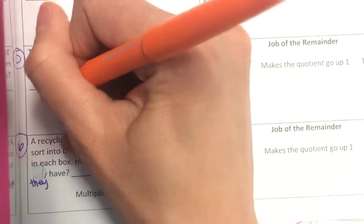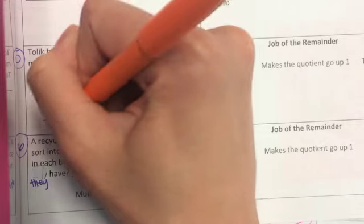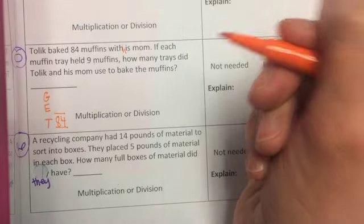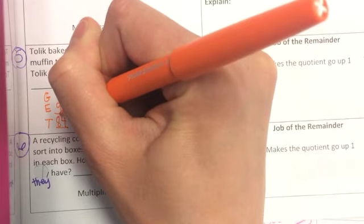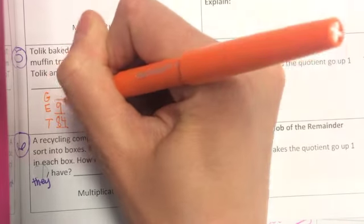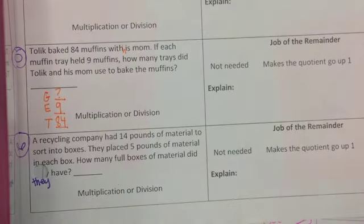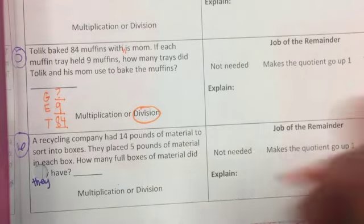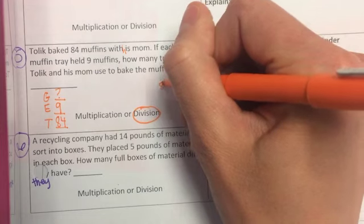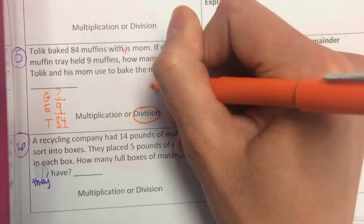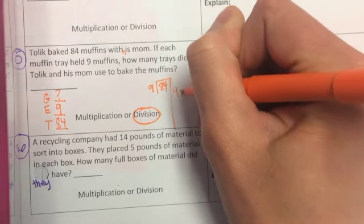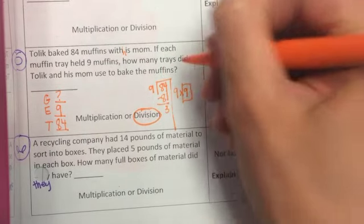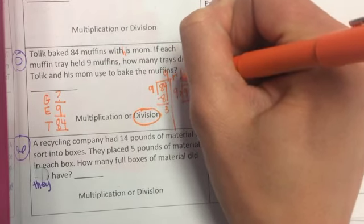Well, first of all, if I think about GET, I would know that my total number of muffins would be 84. My each, if each tray held 9 muffins, so 9 muffins in each tray. I don't know how many trays I have. So here I'm going to divide because I want my answer to get smaller. So if I do 84 divided by 9, 9 times 9 is 81. I subtract and I get 3. So my answer is 9 remainder 3.